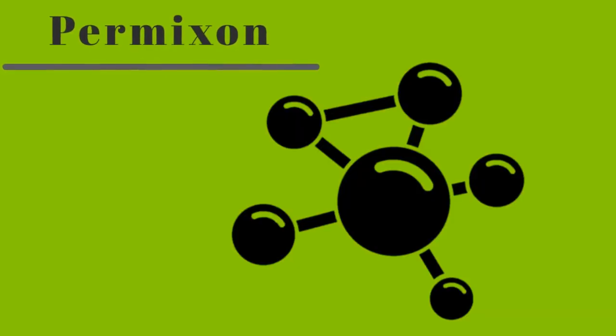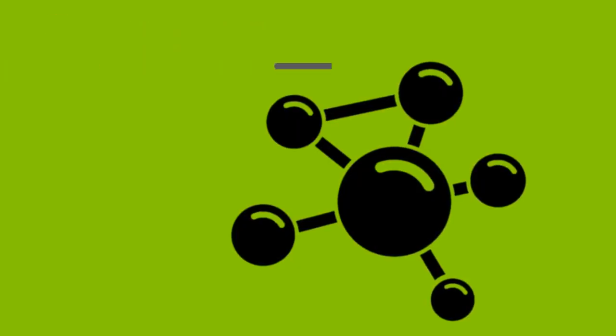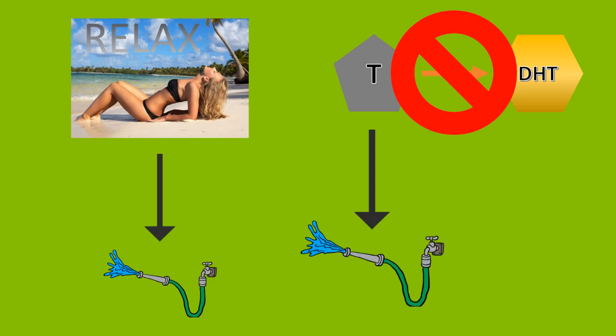The active compound in saw palmetto is permixin, a type of fatty acid. It works by two mechanisms that cause three main effects in the human body.